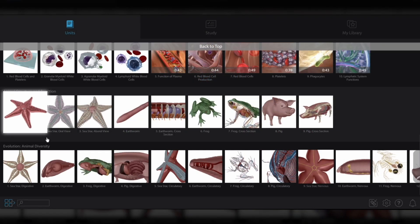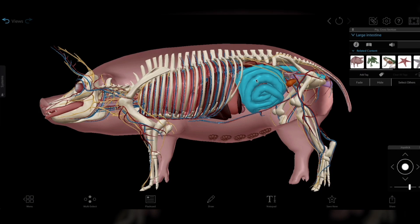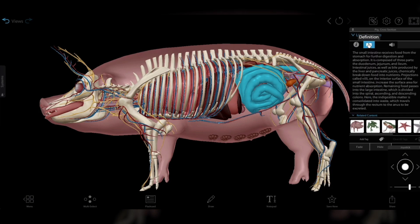Dissect a sea star, earthworm, frog, and pig, selecting structures to reveal more information as you go.